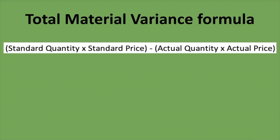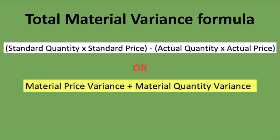The formula for the total material variance is: standard quantity times standard price, minus actual quantity times actual price. Alternatively, as mentioned before, it's the material price variance plus the material quantity variance. If it's unfavorable you put it as a negative, and if it's favorable you put it as a positive when you're entering them into your calculator.